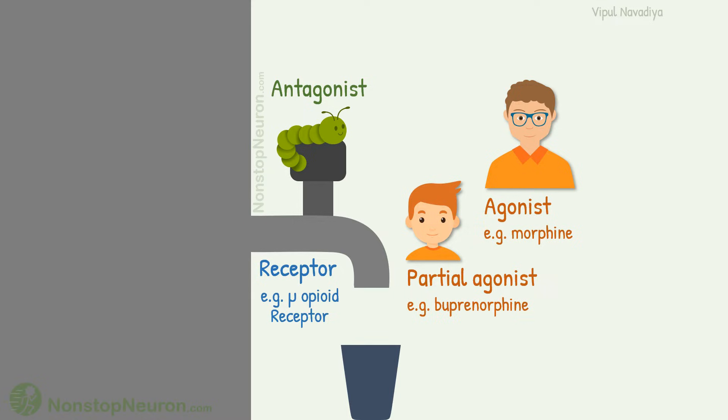Buprenorphine is partial agonist. It activates the receptor, but not to the maximum. Naloxone is antagonist. It has no action of its own, but if morphine or buprenorphine is around, it prevents its action.